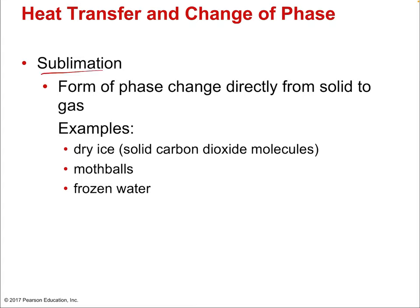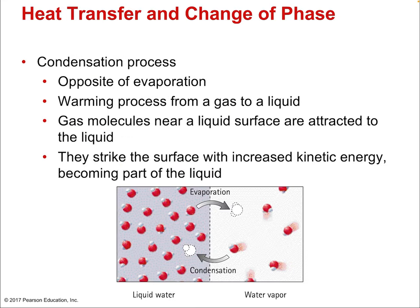Sublimation is a phase change directly from solid to gas, skipping the liquid phase. Dry ice, for example, immediately phase-changes to carbon dioxide gas when surrounded by room-temperature air — it skips liquid entirely. Mothballs do the same. Even frozen water can sublimate, especially with mechanical force — on windy, sunny days in the Arctic, wind energy combined with solar radiation allows the surface of ice to phase-change directly to water vapor.